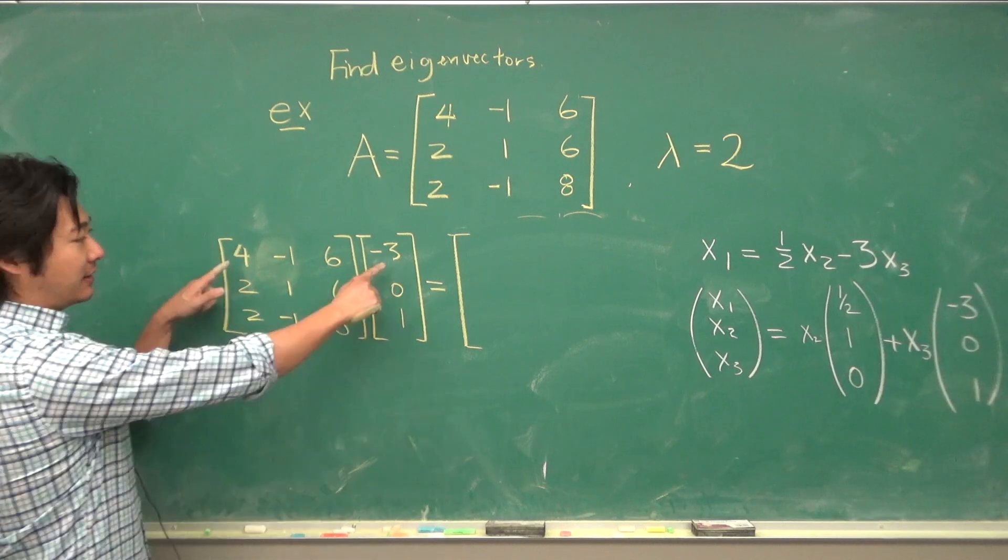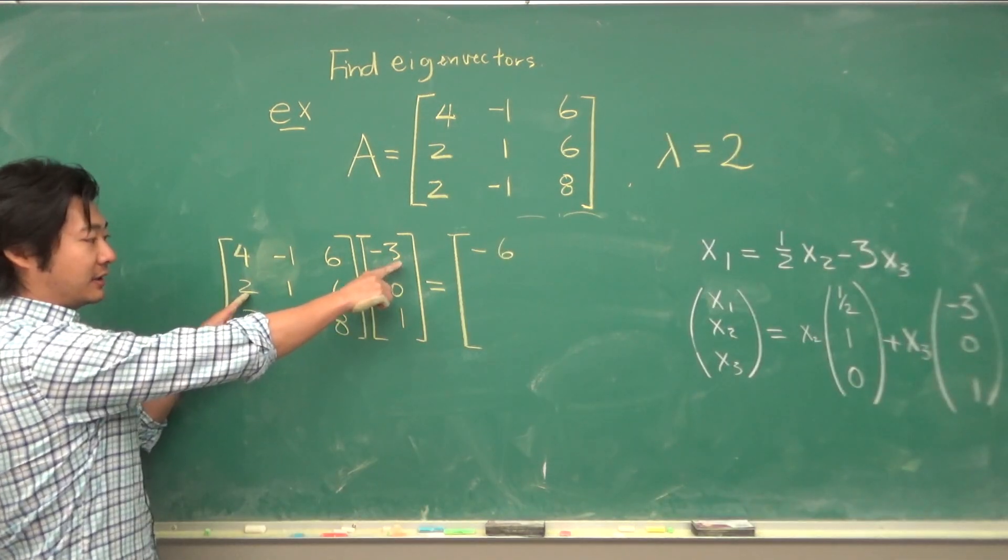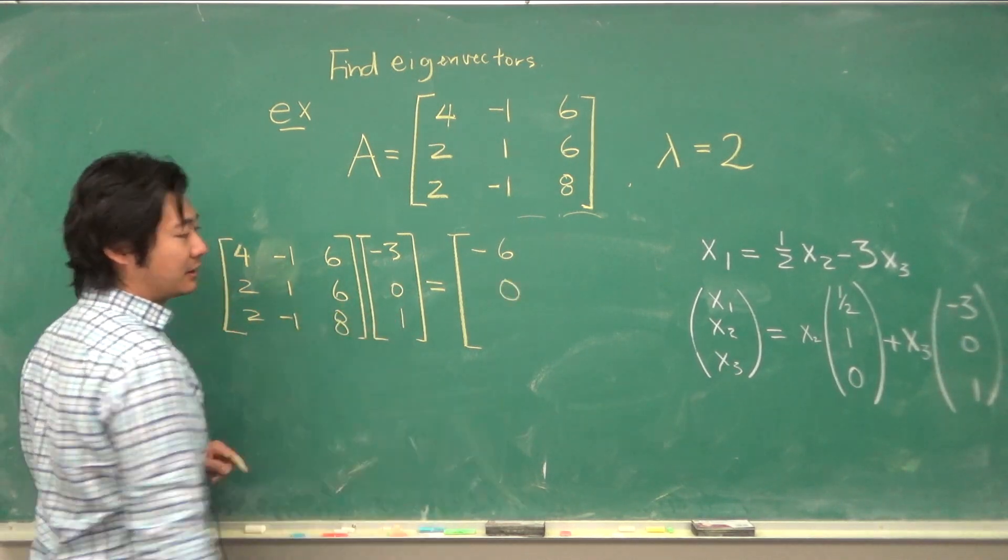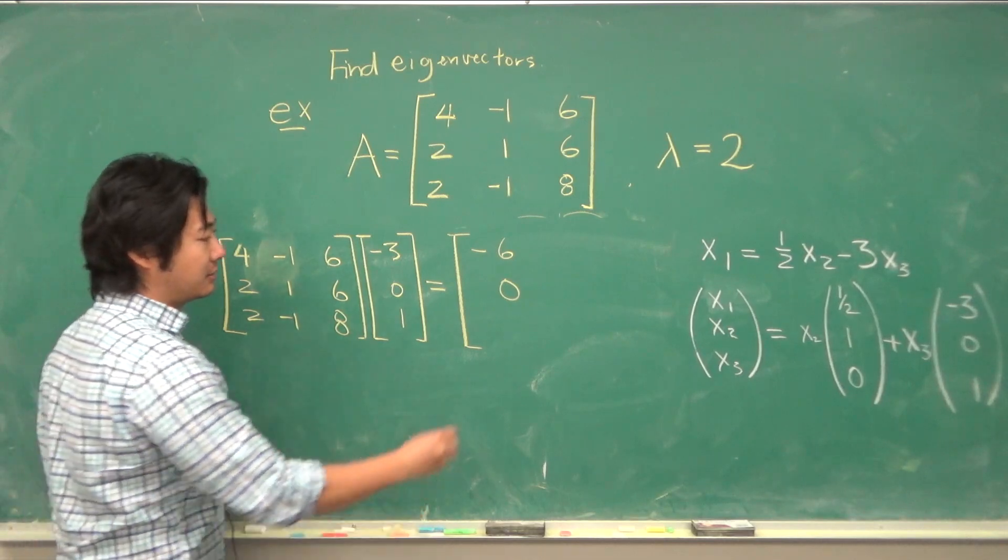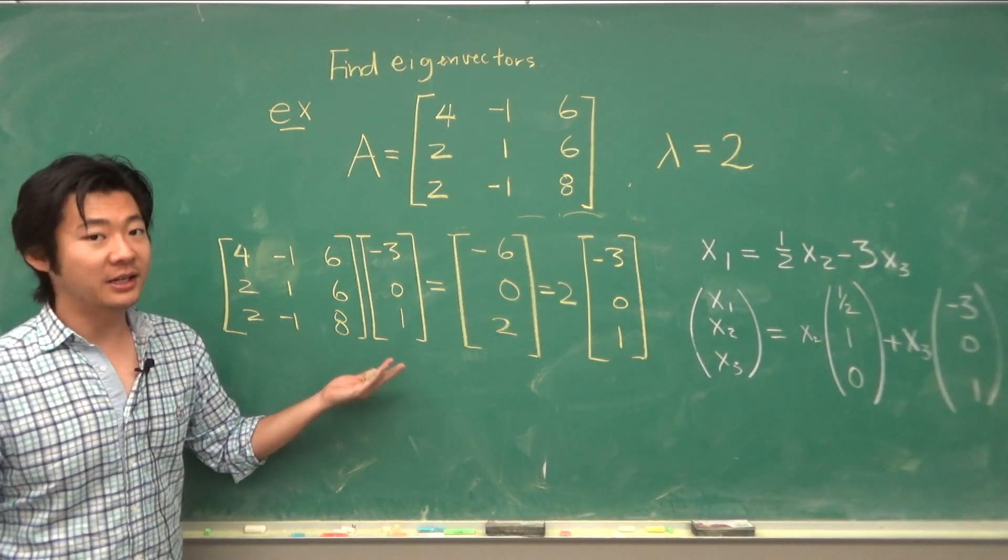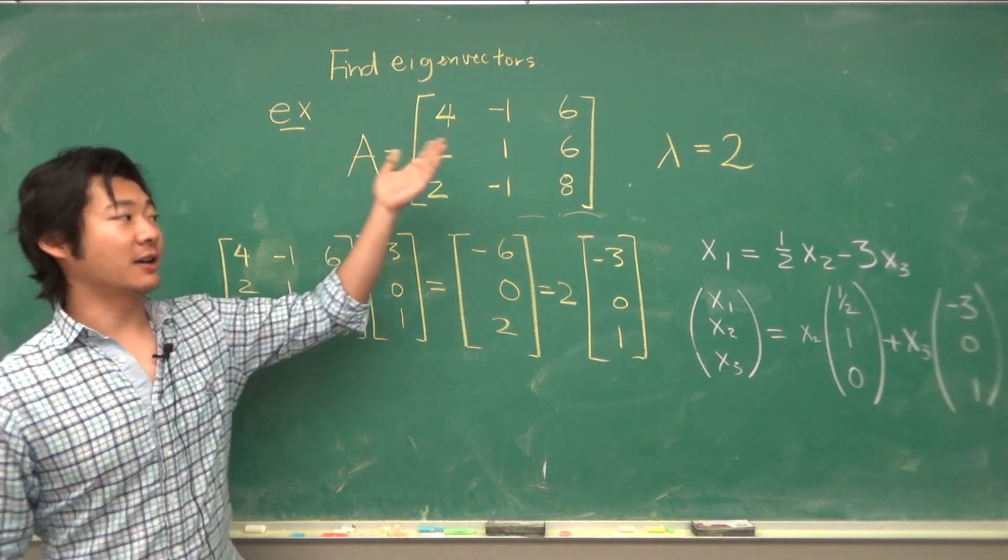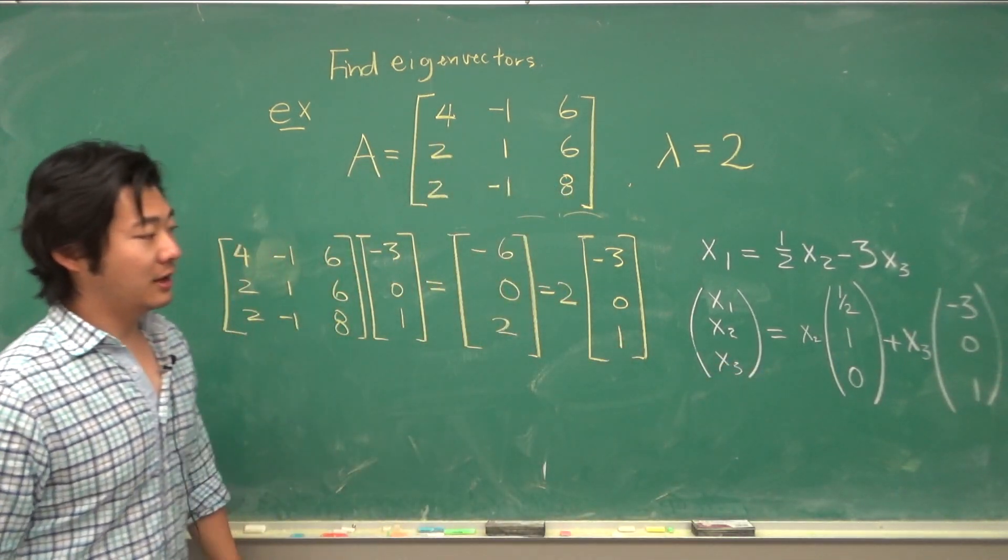Well, we have negative 12 plus 0 plus 6 is negative 6. Negative 6 plus 0 plus 6 is 0. Negative 6 plus 0 plus 8 is 2. And so this is 2 times the original vector. So it's indeed an eigenvector of A with eigenvalue 2. And you can also check the same with this vector, 1, half, 1, and 0.